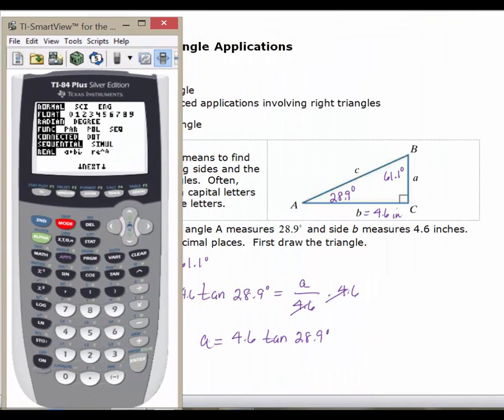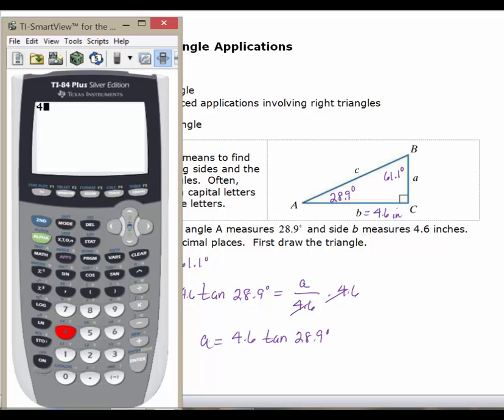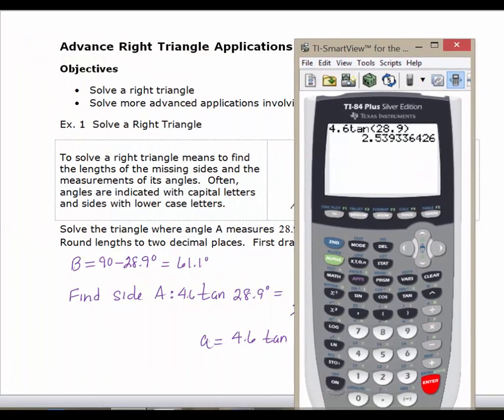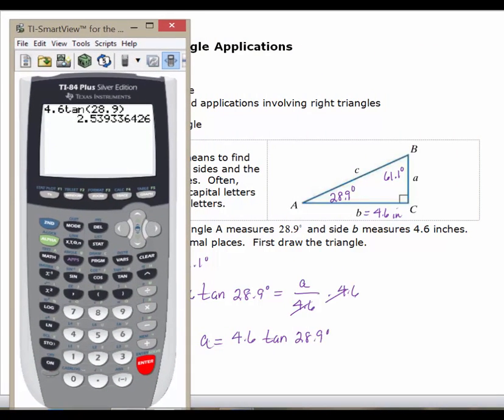We'll evaluate that in our calculator. Making sure that I am in degree mode. It's really important that you double check your mode when we move back and forth. When dealing with triangles, generally we are in degree mode. So 4.6 times the tangent of 28.9. We're asked to round lengths to two decimal places, so A is approximately equal to 2.54.